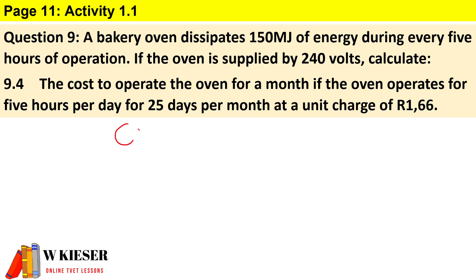To determine the cost of running this oven over 25 days, the formula we're going to use: we have the tariff that Eskom charges, R1.66. To work out the cost, we multiply the tariff by the number of hours and by the power in kilowatts.